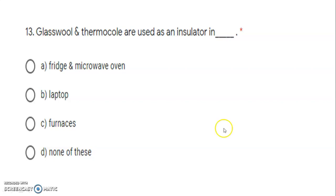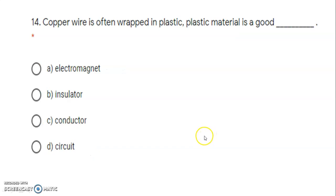Next: glass wool and thermocols are used as insulators. They are used in the fridge and microwave oven — that is the correct option. Next: copper wire is often wrapped in plastic. If copper wire were used without plastic or rubber wrapping, it could damage a person who touches the wire while electricity is passing through it. Plastic is a very good insulator and does not carry electricity, so the correct answer is insulator.